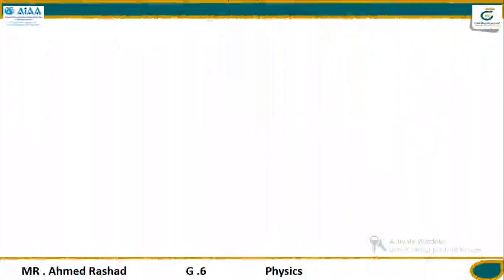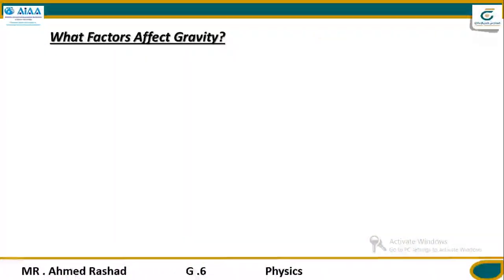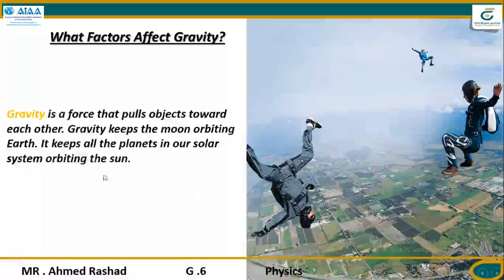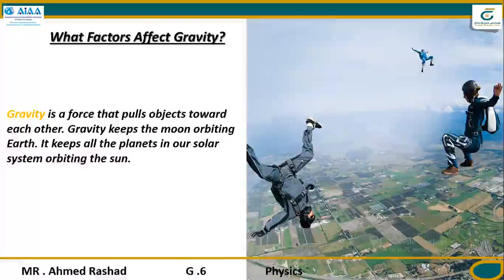Now we move to the next step in our lesson: gravity. What is the meaning of gravity and what are the factors that affect it? You can watch this picture and observe the effect of gravity. Gravity is a force that pulls objects toward each other. Gravity keeps the moon orbiting the earth and keeps all the planets in our solar system orbiting the sun. We have two kinds of gravity in our lives.